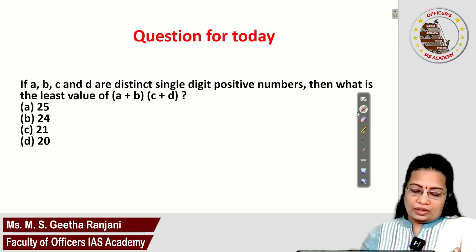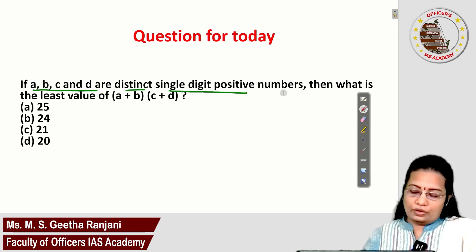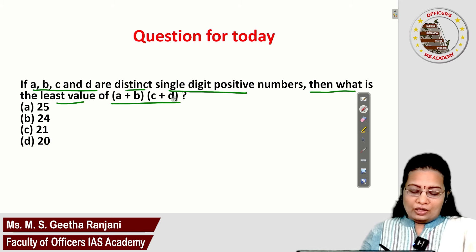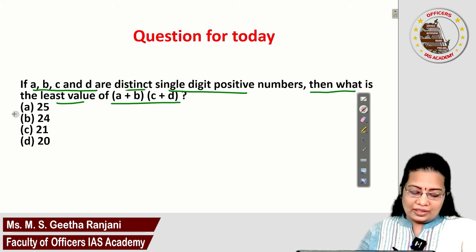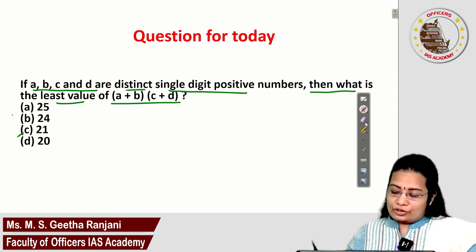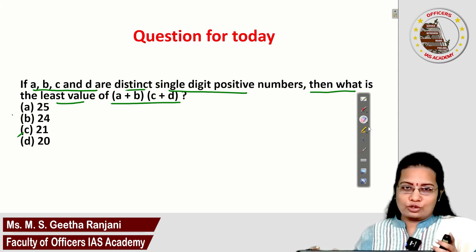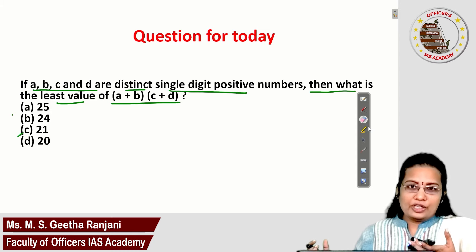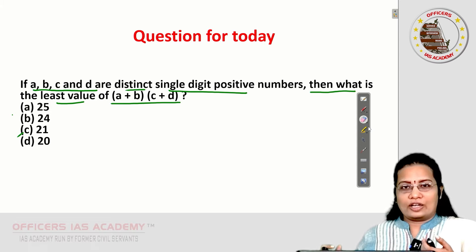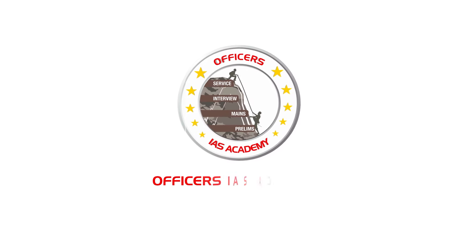Today's question: if A, B, C and D are distinct single digit positive numbers, what is the least value of (A×B) + (C×D)? The options are: 25, 24, 21, 22, 20. Post your answers in the comment section as usual, and we will meet you in the next session with another interesting question. Thanks for watching.